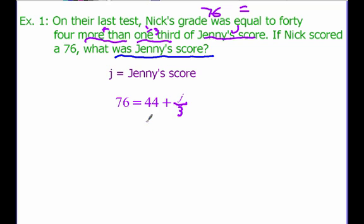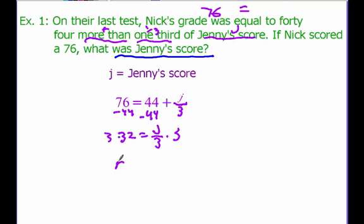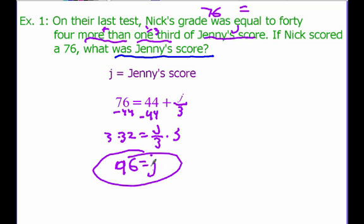So how do we solve this? We start by subtracting 44 from both sides. 76 minus 44 is 32, equals J divided by 3. Multiply both sides by 3 to get rid of the fraction, and we find out that Jenny got a 96 on the test. So all we did was define our variables, set up an equation, and then solve that equation.